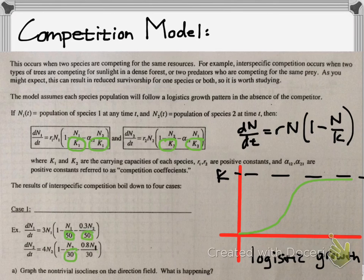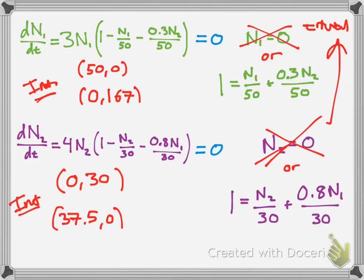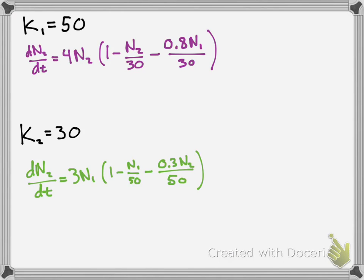So if you use the numbers that represent the constants, or the carrying capacity here, notice how it's 50 and 30, if you plug them into the opposite equation, or into the equations, you can figure out which one will survive and which one would go out first. So let's do that.